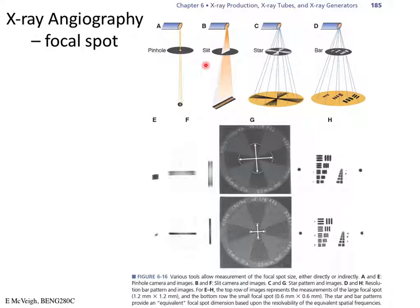You can measure the spot size by putting a pinhole in tin foil and sticking it in the scanner — essentially a pinhole camera image of the focal spot. That tells you precisely the shape of the focal spot on your x-ray tube. The manufacturer will tell you the focal spot size, but you can validate it with a simple picture.